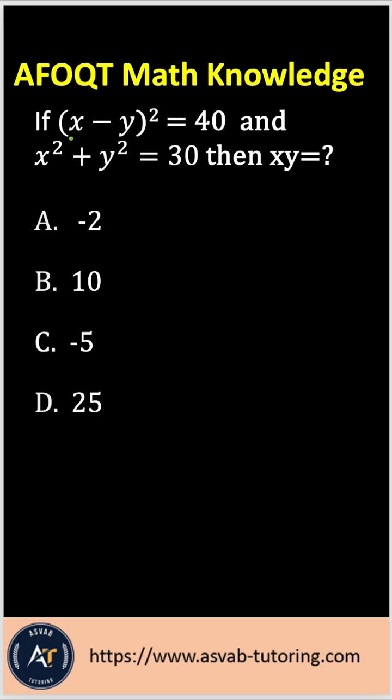In order to solve this problem, what you have to do is expand x minus y square. So let's do it here. That gives you x minus y squared equals x minus y times x minus y.